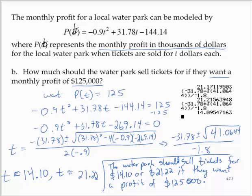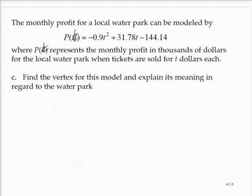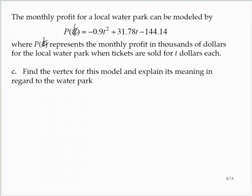And part C, same function: find the vertex for this model and explain its meaning in regard to the water park. Alright, well, finding the vertex is easy.